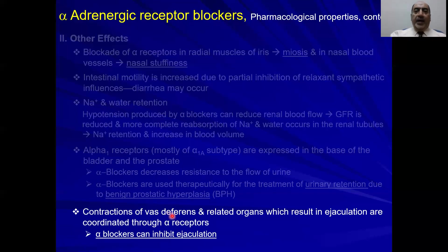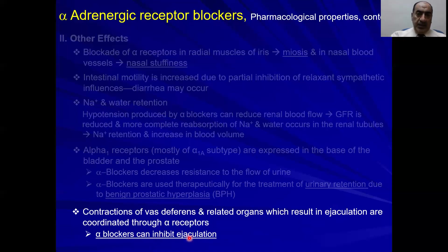The normal sympathetic response of the vas deferens is contraction, resulting in ejaculation. If you inhibit this coordinated alpha receptor response, ejaculation is inhibited instead. Sympathetic nervous system induces ejaculation while parasympathetic induces erection. This ejaculation response is inhibited by alpha blockers, specifically tamsulosin when we discuss individual drugs.